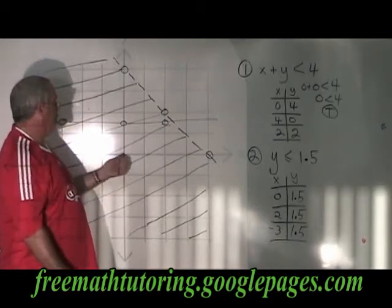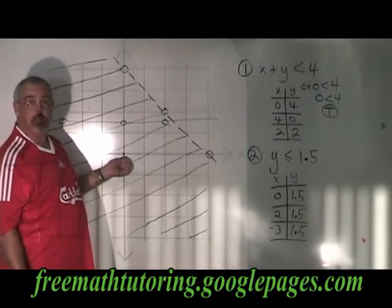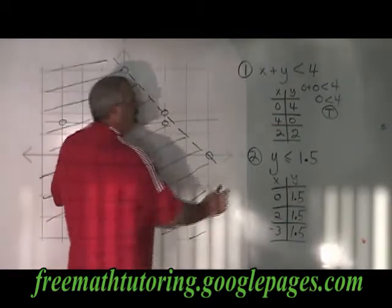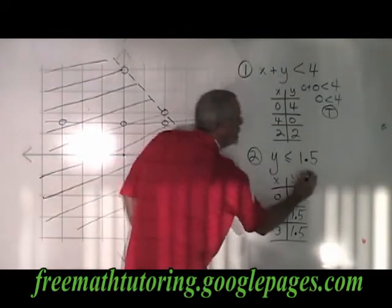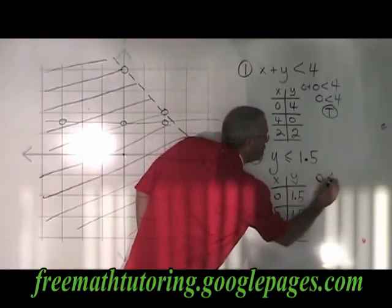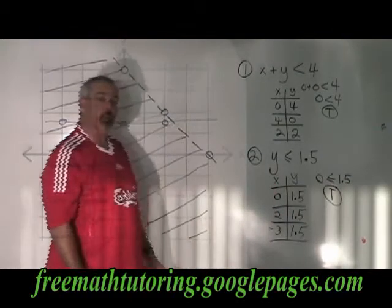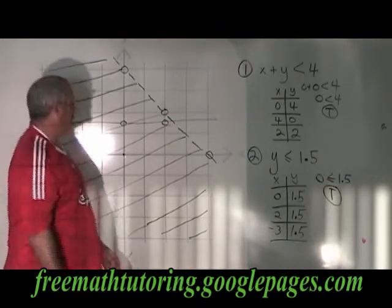It's time to do my test point. Again, I'm allowed to use 0, 0 as the test point because the line does not go through 0, 0. So I plug 0, 0 into this equation, and I get 0 less than or equal to 1.5. Again, this is true.